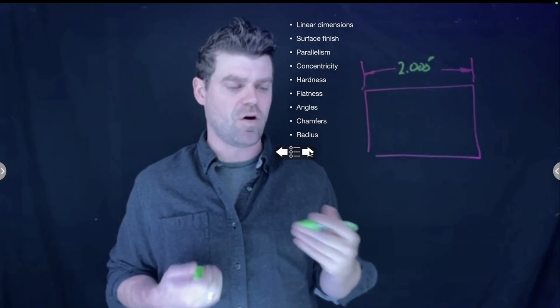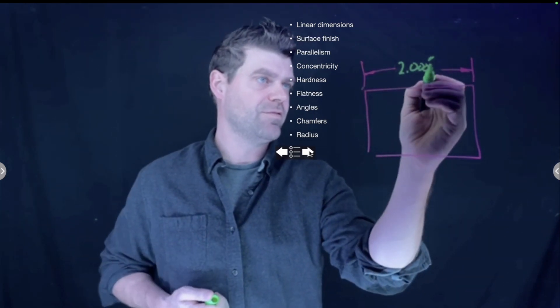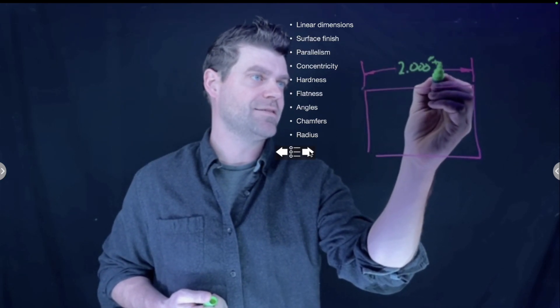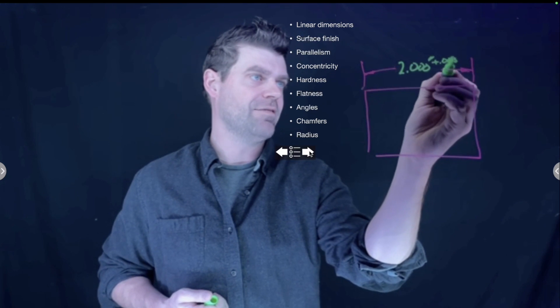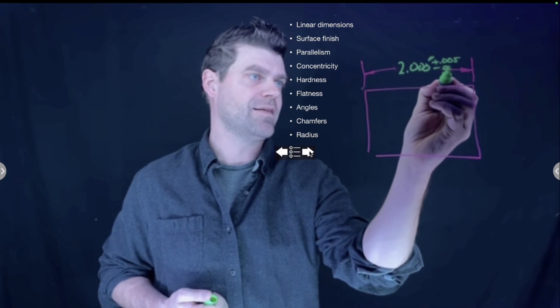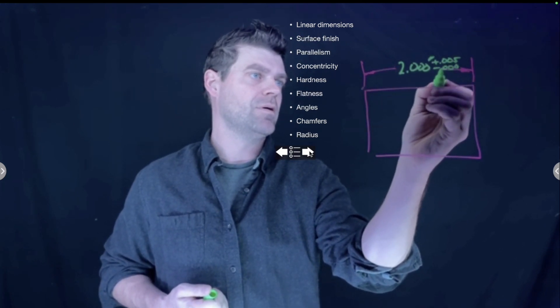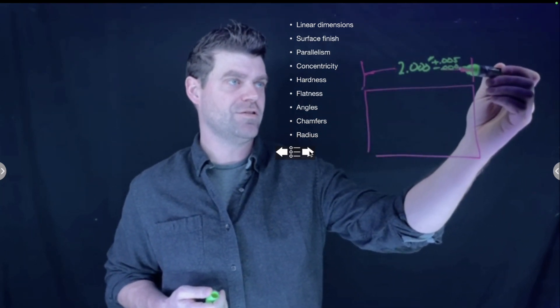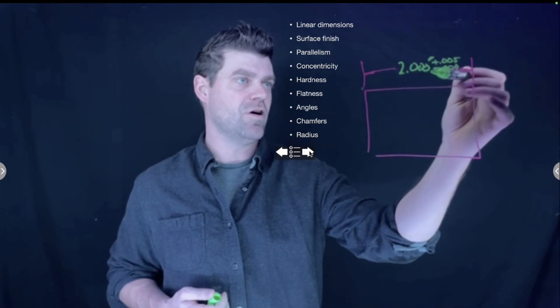So I can do the tolerance a few different ways. One way that I can do it is I can go, I can be plus, let's say, five thou minus nothing. Okay, so this would be an example of a unidirectional tolerance, where it's two inches long and it can be, I can be at a maximum five thou larger.